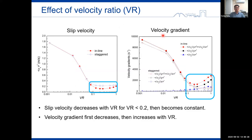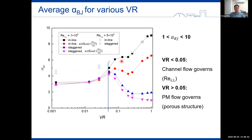Well, for non-parallel flow cases, the velocity ratio is found to have strong effects on both the slip velocity and the velocity gradient. Therefore, it affects the alpha value as well. Here in this figure, summarizes the interface averaged alpha for different Reynolds numbers, different pore structures, and also different velocity ratios.